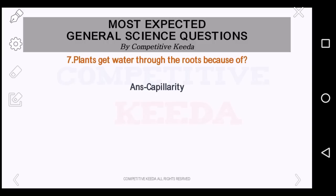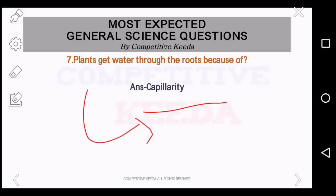Now, plants get water through the roots because of which feature? It is capillarity. Capillarity action is the ability of a liquid to flow in a narrow space without the assistance of, or even in opposition to, external forces like gravity. So plants get water through roots because of this — capillarity.